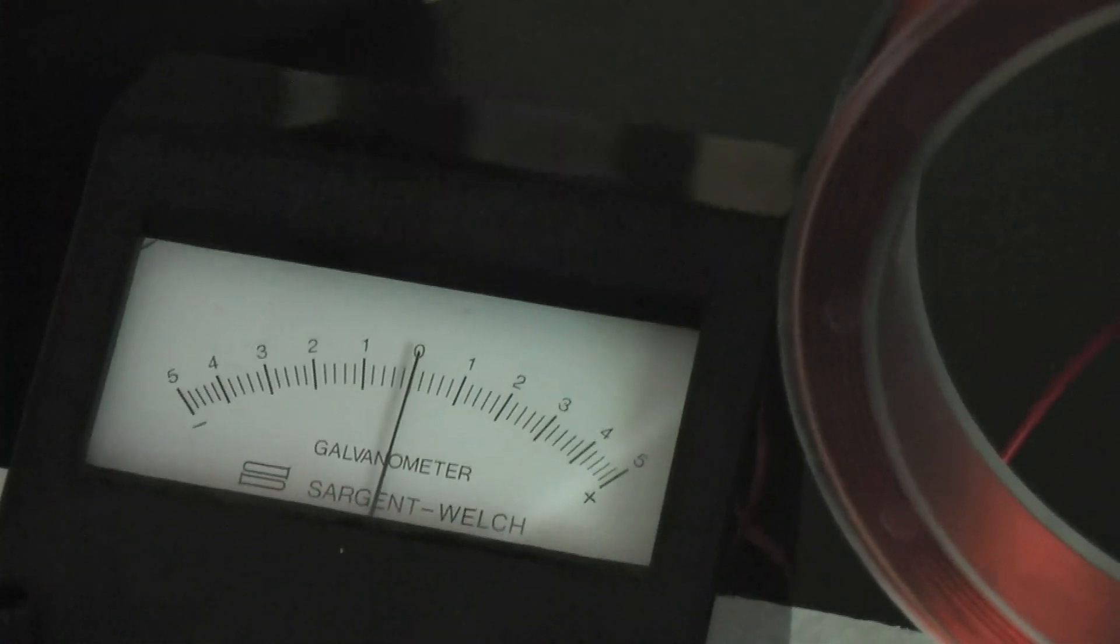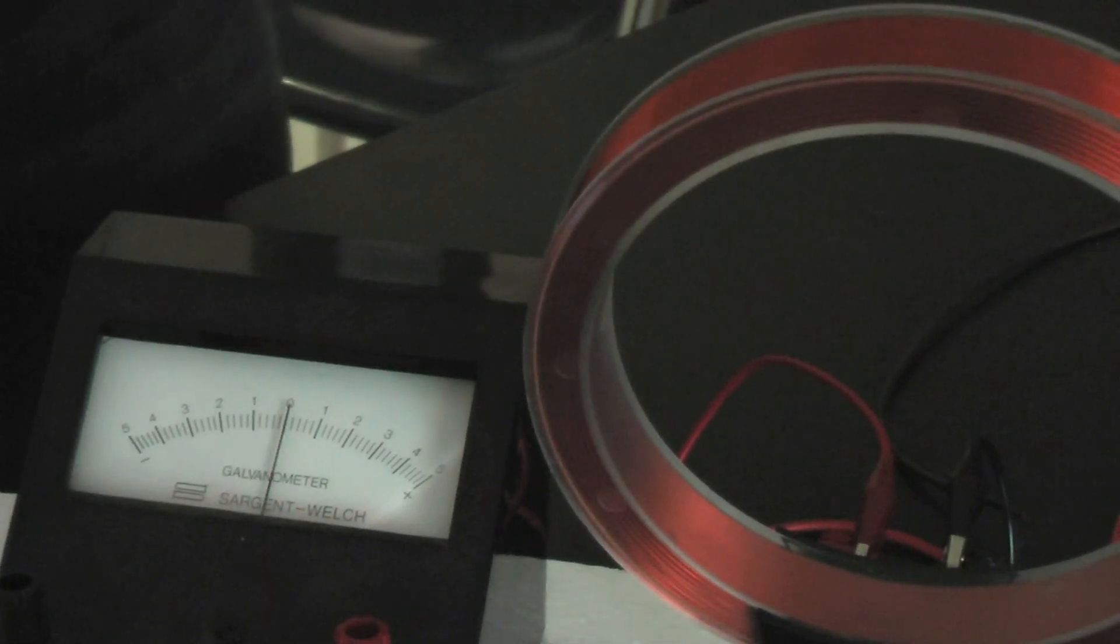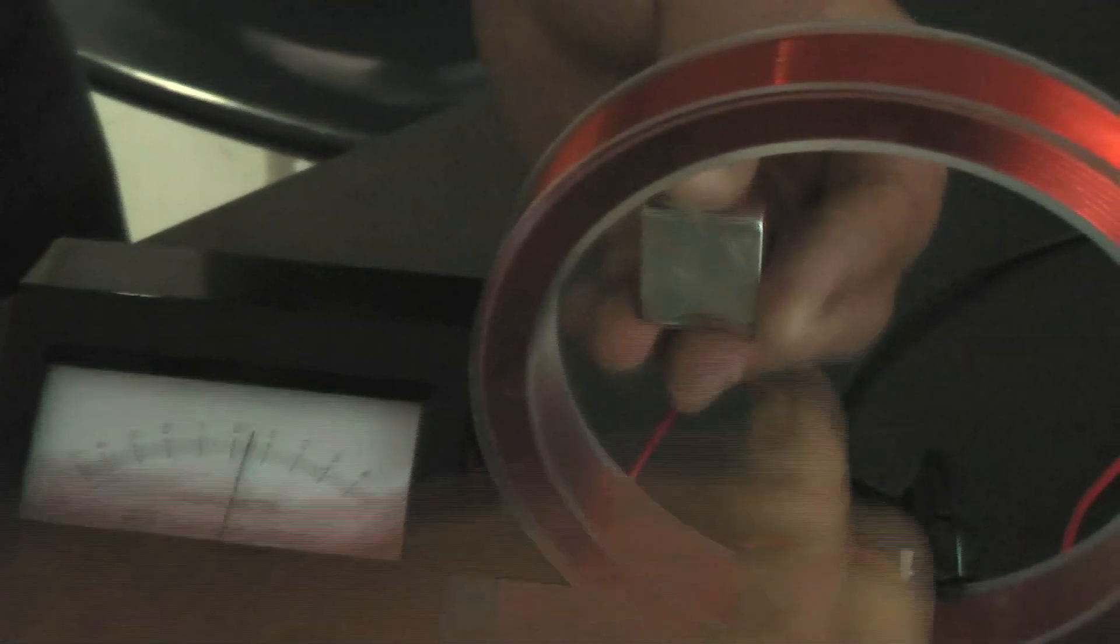Now Lenz's Law tells us that basically Lenz's Law is like an old man. He's trying to fight the change. So if I have a magnetic field that's increasing, increasing, increasing, current's going to flow in the loop to fight that change.